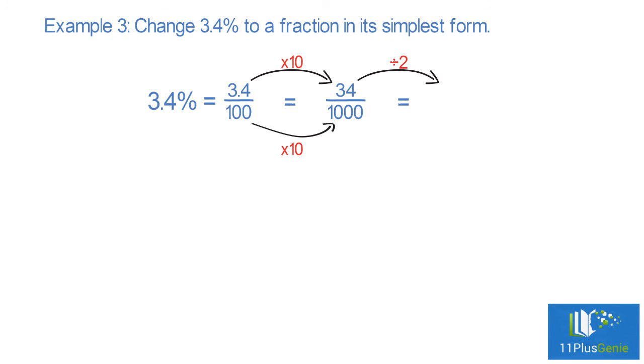34 divided by 2 equals 17, and 1000 divided by 2 equals 500. So 3.4% equals 17/500.